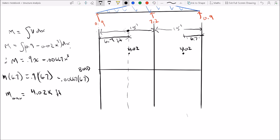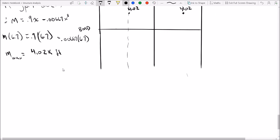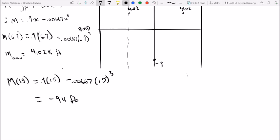So now we want to find the moment at our support reaction B. So we're going to plug in, find M of 15, simply in our equation, negative 9.